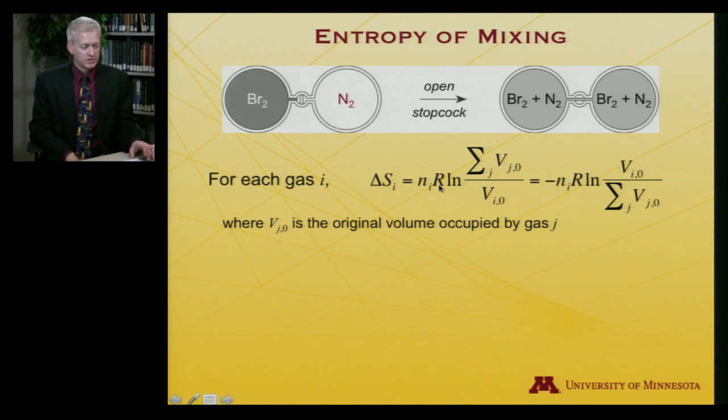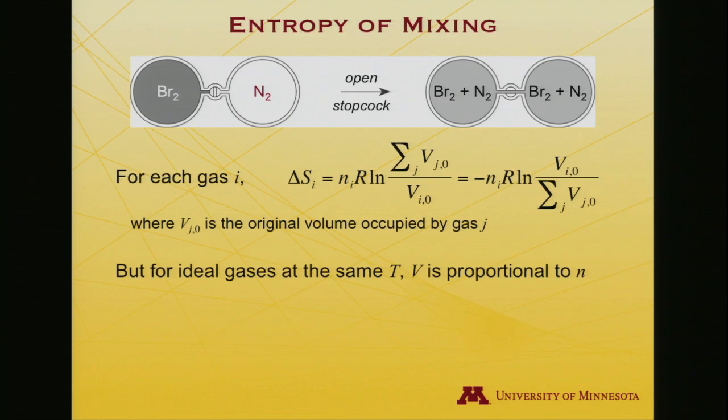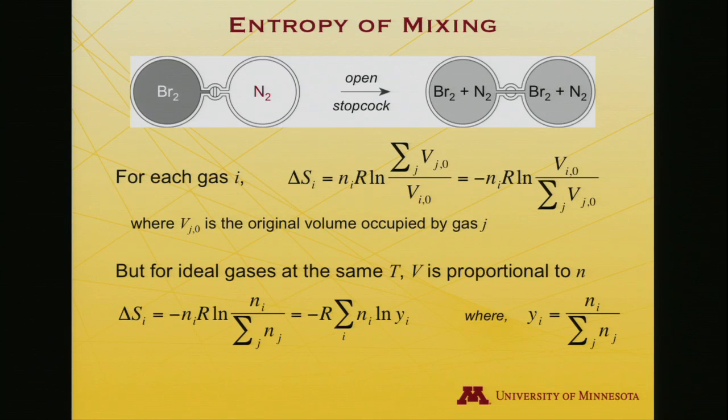It is, for each individual gas, the number of moles of that gas times R times the log sum over all the volumes that are now accessible, and maybe there's J different flasks that are all interconnected, divided by the original volume. And if I, for purposes that will become apparent in a moment, if I want to put a minus symbol out front, I can put this sum in the bottom. So all I've done is inverted the argument and hence changed the sign of the logarithm. However, for ideal gases, all at the same temperature, the volume is actually proportional to the number of moles. And so I can replace where volume appears with number of moles. So I get the change in entropy for a given gas i is minus the number of moles of i, R log number of moles of i divided by the total number of moles in the system.